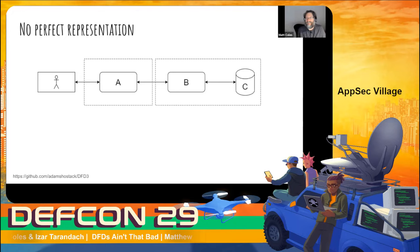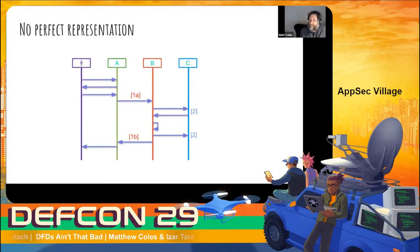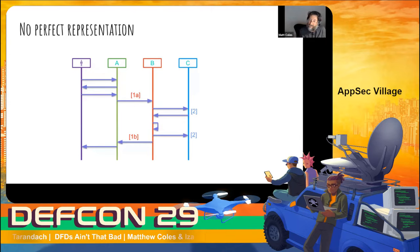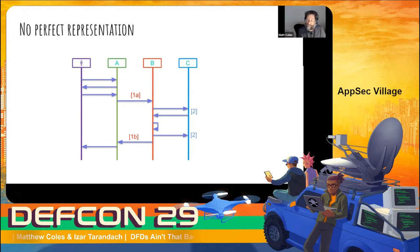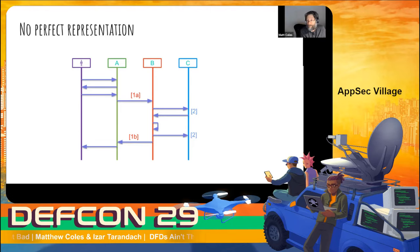The next slide shows yet another representation of the same system: a sequence diagram. We left out the specific details of messages, but again we have a user, A, B, and C, there's a flow to that data, and there's an order of operations. If you take this and match it to the previous diagram, you'd have a really good understanding of how the system actually operates. You document the system and as a side effect you can then do things with that to get value, including finding threats. We finally have a way of representing a system — it doesn't have to be perfect, it just has to be meaningful.